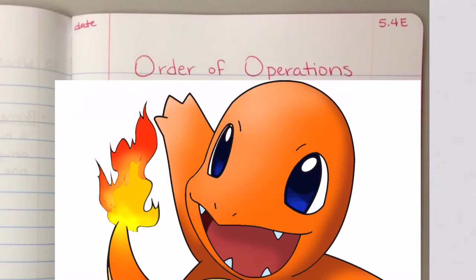Alright scholars, you should have turned to the page that was listed on the instructions. Be sure you write your date in the corner. This is 5.4E and your title is Order of Operations.